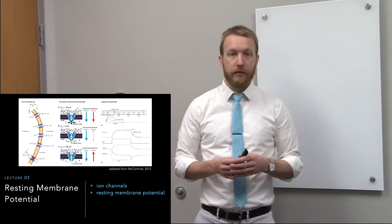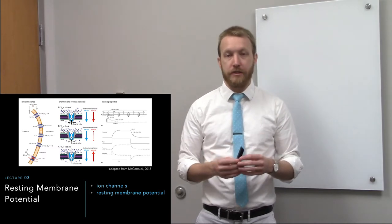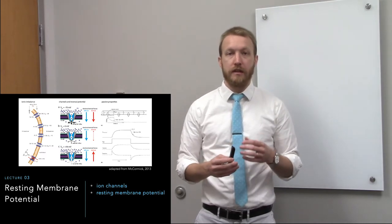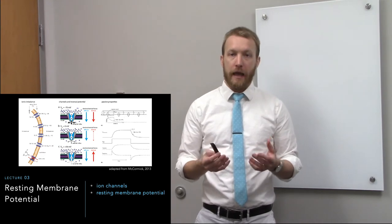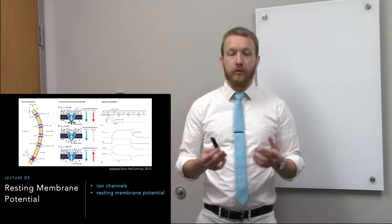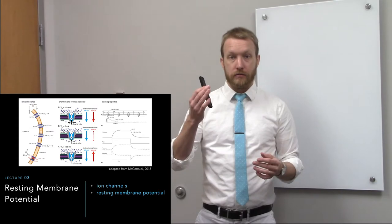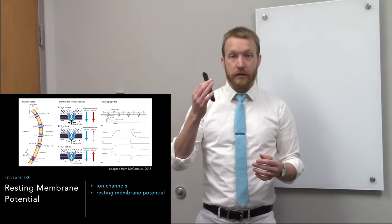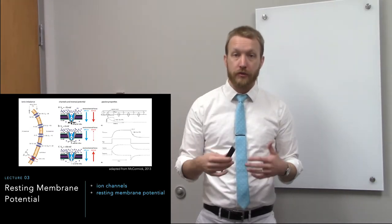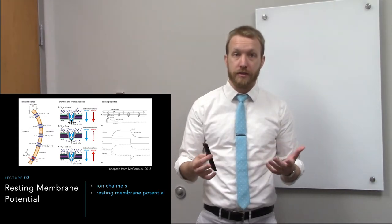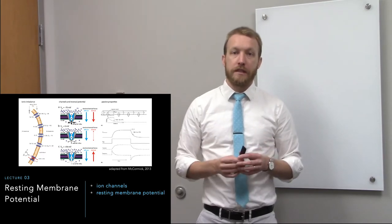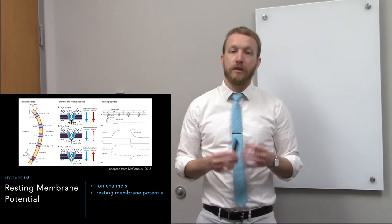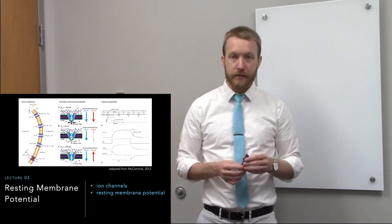To understand resting membrane potential, we have to understand the ionic imbalance that exists at the membrane, the ion channels that allow ions to move through the membrane and create currents and potentials. Then we can put all that together to see what's going on at rest in the neuron.